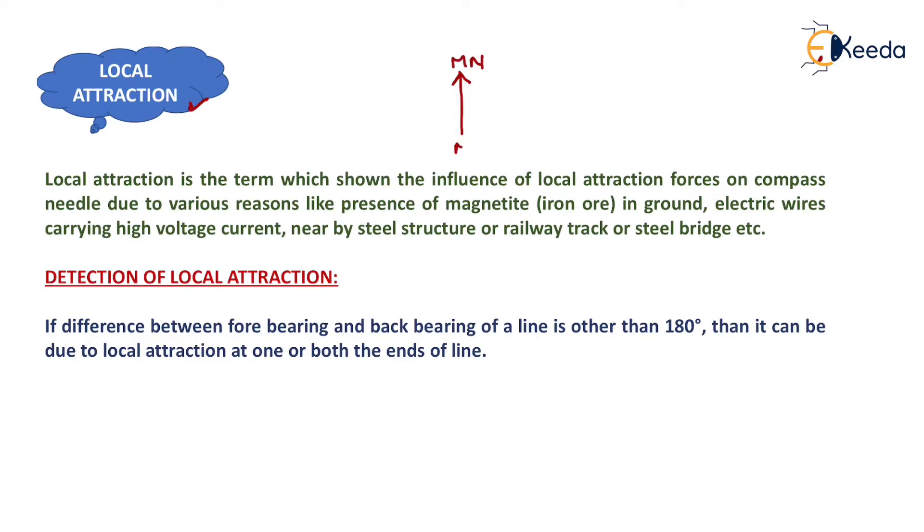Uninfluenced by other attraction forces, however due to presence of local magnetic field like this, the compass needle can be slightly deviated from the actual magnetic north like this. That is the deviated position of the compass needle.